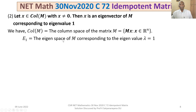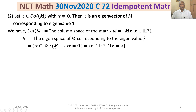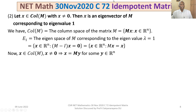The eigenspace E₁ is the set of all x ∈ ℝⁿ such that (M − I)x = 0, i.e., Mx = x. Now, if x belongs to the column space of M with x ≠ 0, then x = My for some y ∈ ℝⁿ. Pre-multiplying both sides by M gives Mx = M²y. Since M is idempotent, M² = M, so Mx = My = x.